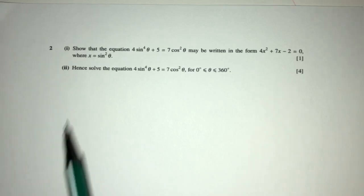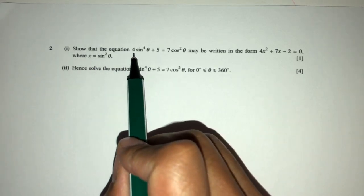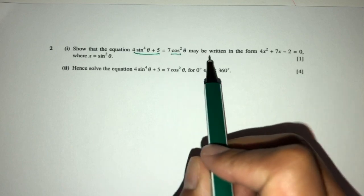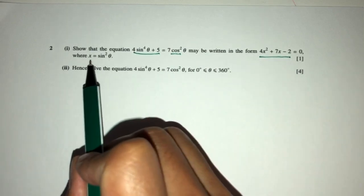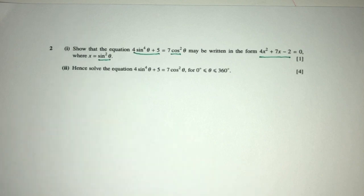Now let's move on to the next question. So here we have to show that this equation may be written as this equation where x can be this. So let's see what can we do.